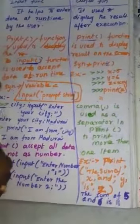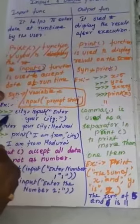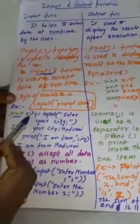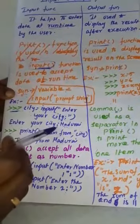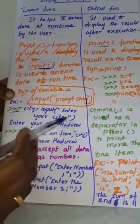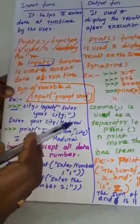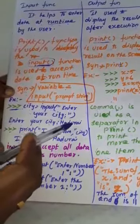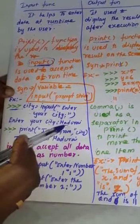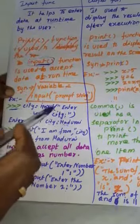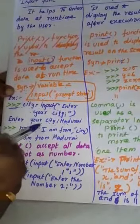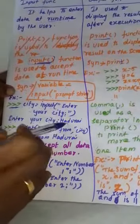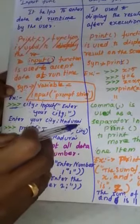This is the example. This is the command prompt. One of the examples: city equal to input enter your city. Enter your city, Madhurai. Madhurai is, you are typing the city name. Enter your city is an input function using. And next, press the enter key. Display the output. Enter your city. Next, you type the city name.